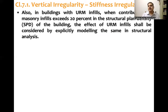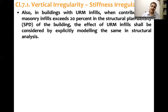Also, in buildings with unreinforced masonry (URM) infills, when the contribution of masonry infills exceeds 20 percent of the structural plan density of the building, the effect of URM infills shall be considered by explicitly modeling them in the structural analysis. There are walls in the frame — sometimes one brick thick (230 mm) walls and sometimes half-brick thick walls. If the URM infill area exceeds 20 percent of the structural wall plan density, these infills need to be modeled per clause 7.9.